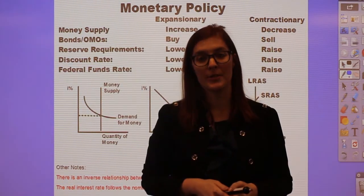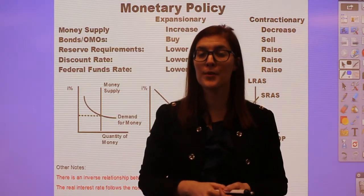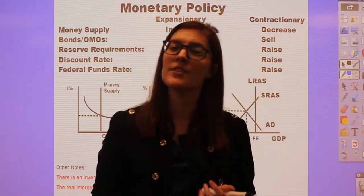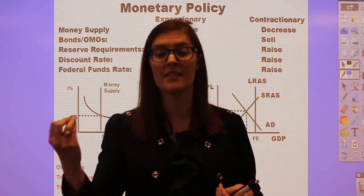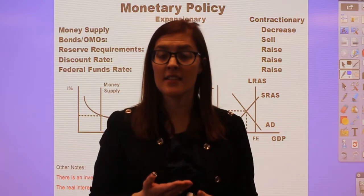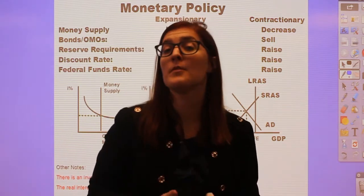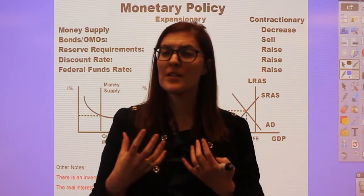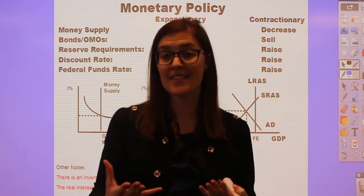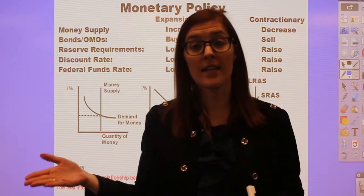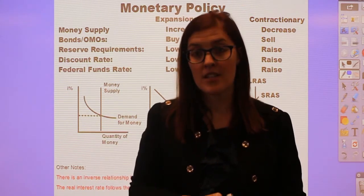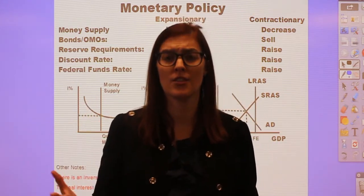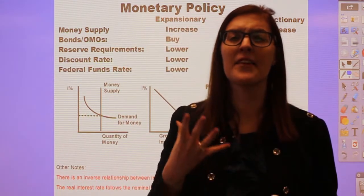This is the Unit 3 AP Macroeconomics Review. Unit 3 was all about the Federal Reserve, money, and monetary policy. This tends to be one of the trickier units because most of us don't really know what the Federal Reserve does on a daily basis. They are an unelected position, nominated by the President and confirmed by the Senate, and they decide policy without our vote and independently from the government.